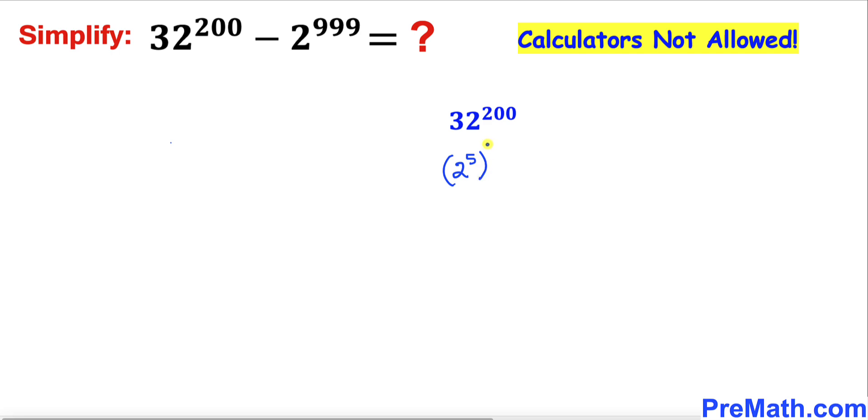Now let's recall this power rule of exponents we are going to apply here. We are going to multiply out these nested exponents. Therefore we can write 2 to the power of 5 times 200, which is going to give us 1000.